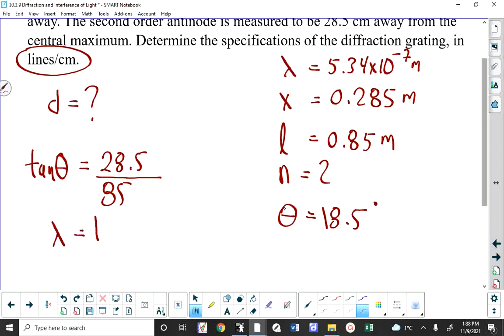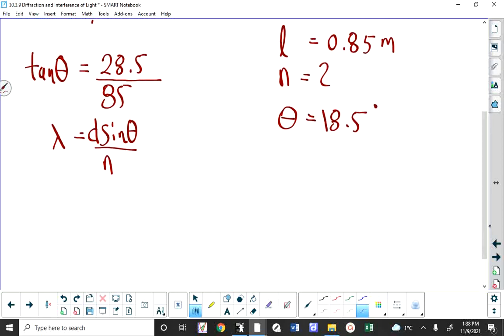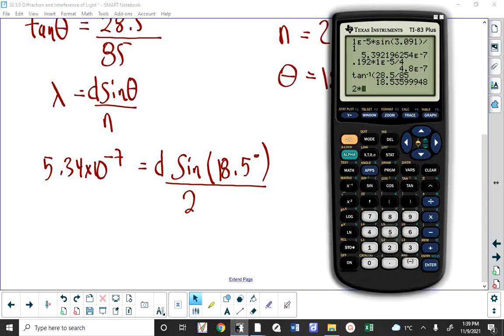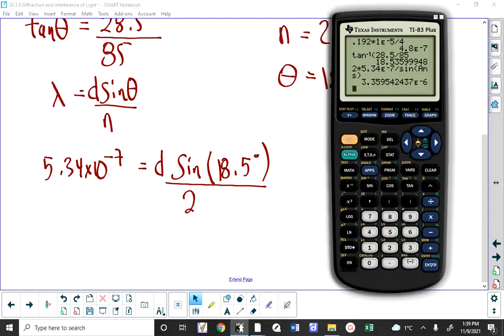We can now use lambda equals D sine theta over N to find D. So it looks like we'll have to take that wavelength, multiply it by 2, then divide it by sine of the angle. That will be D in meters. 2 times 5.34 multiplied by 10 to the negative 7, divided by sine of our answer. So I'm getting this for D. And that's meters. 3.4 times 10 to the negative 6 meters.